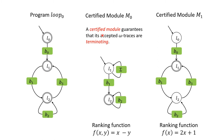A certified module must guarantee that all accepted traces are terminating and must show the same termination argument. In this way, we may construct a set of certified modules. If we can prove that all omega traces accepted by the program automaton are covered by these certified modules, we can conclude that all omega traces of the program automaton are terminating.